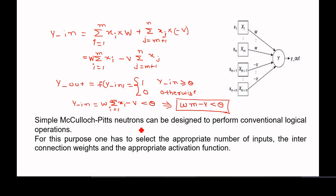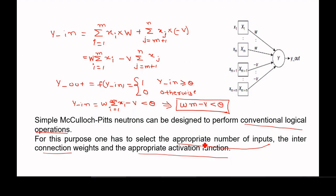We can use this simple McCulloch-Pitts neural model to perform conventional logic operations. To do so, we simply select the appropriate number of inputs, interconnection weights, and activation function. The same model we studied can implement standard logical operations from digital electronics.